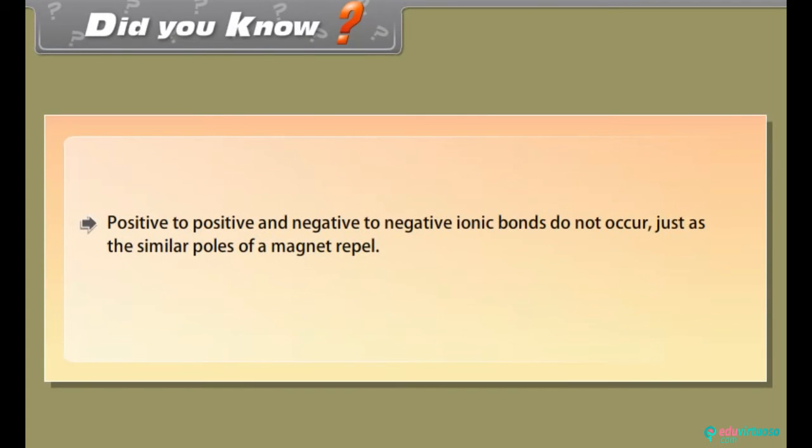Did you know? Positive to positive and negative to negative ionic bonds do not occur, just as the similar poles of a magnet repel.